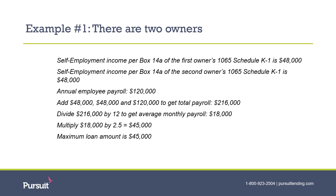We are now going to calculate a few examples so you can see this at work with specific numbers. In this example, the self-employment income on line 14A was $48,000 for each of two owners of the partnership. In addition, the annual employee payroll was calculated at $120,000. We add these three numbers together — $48,000 from partner one, $48,000 from partner two, and $120,000 in annual employee payroll — giving us a total annual payroll of $216,000. Dividing by 12 gives an average monthly payroll of $18,000, and multiplying by two and a half gives a maximum loan amount of $45,000.